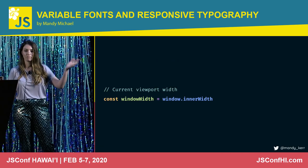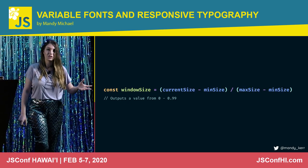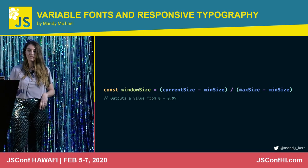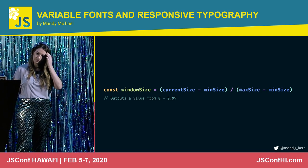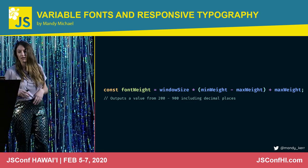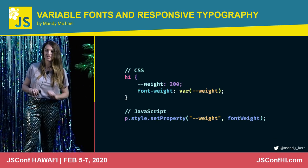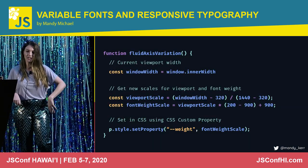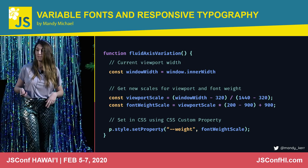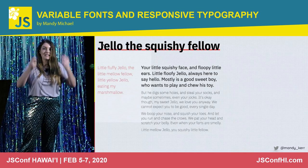We get our current viewport width with window.innerWidth or something. Then we need to convert that to a decimal: we take the current size, minus the minimum, divide by the maximum minus the minimum size, and that gives us our decimal. We take that decimal, multiply it by the minimum weight minus the maximum weight, and then add the maximum weight on. Then you update it in your CSS — I'm using CSS custom properties because they're amazing. Whack it all in a function — it looks something like this. I will share my slides later, and it's on GitHub and CodePen so you can just copy it from there. Once you have this, put it in an event listener for resize, and that's how you make it adjust to the viewport.